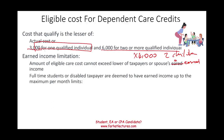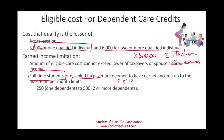Full-time students or disabled taxpayers are deemed to have earned income. If you are a full-time student or a disabled taxpayer, you are deemed to have earnings of $250 per month for one qualifying individual, or $500 per month for two or more individuals. So if a mother is going to school full-time and putting her child in daycare, she is deemed to earn $250 per month for one dependent.